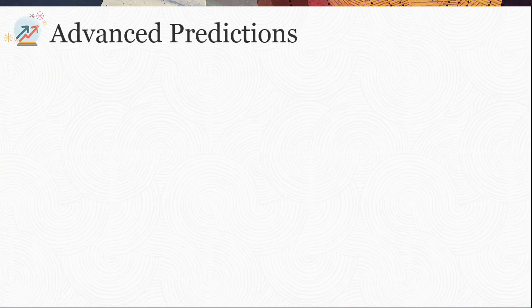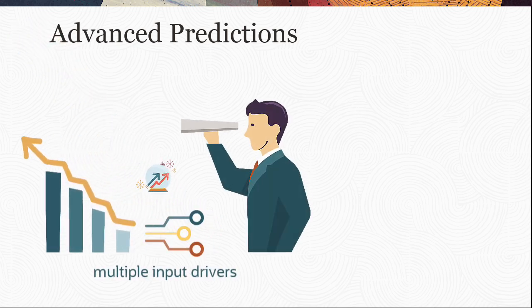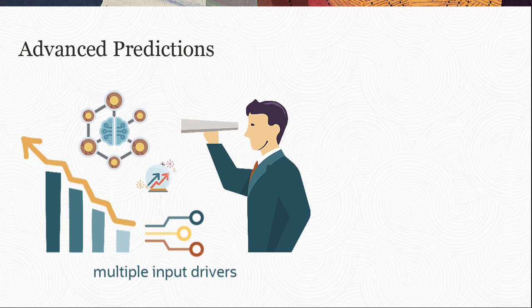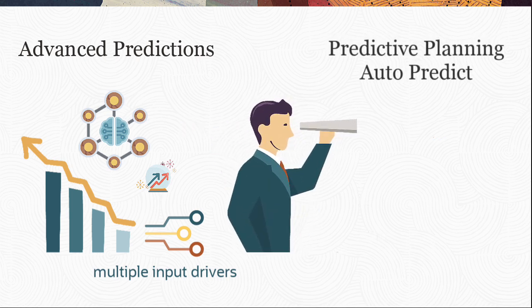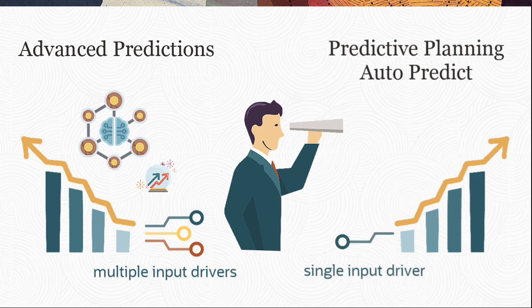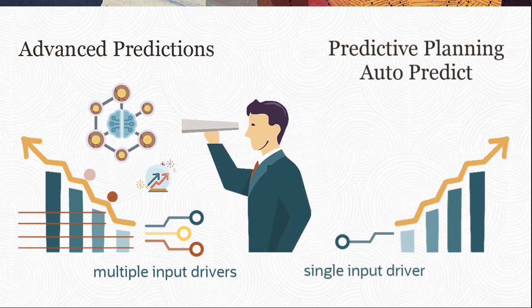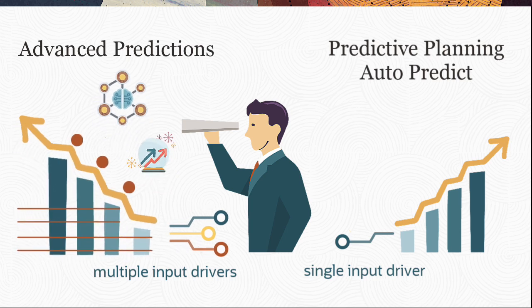Advanced Predictions in Cloud EPM enables you to forecast better using multiple input drivers and sophisticated forecasting and machine learning algorithms. Predictive Planning and AutoPredict use univariate forecasting based on a single measure, while Advanced Predictions uses advanced statistical and machine learning algorithms to generate multivariate predictions to improve your forecasting accuracy.